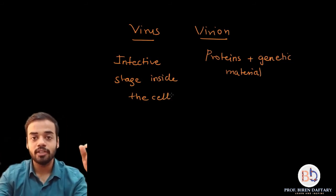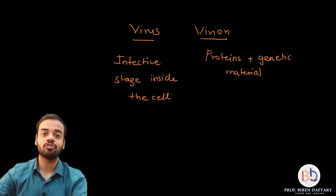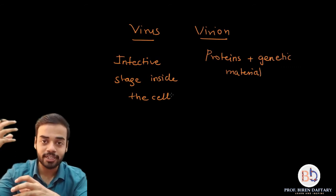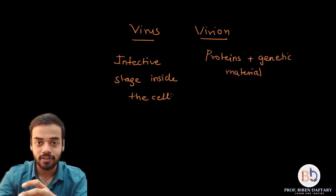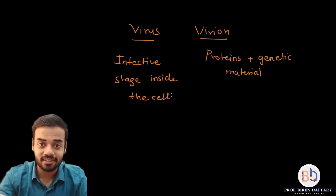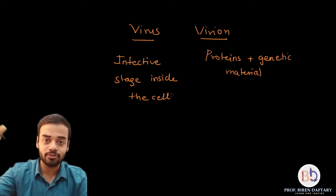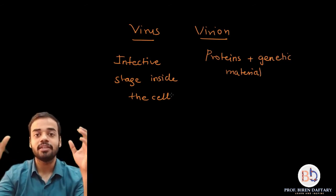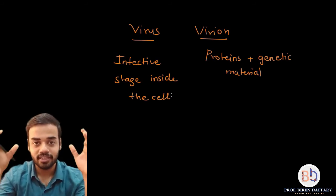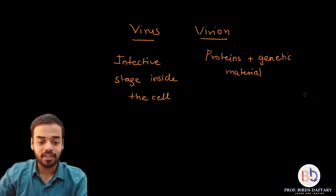A virion will have proteins and the genetic material, and it has not yet entered the cell — the virulence has not yet begun, the pathogenicity has not yet been caused. That is the virion stage. Whereas when it enters the cell — either just the DNA enters or the entire unit — and it causes pathogenicity, then it is called a virus.